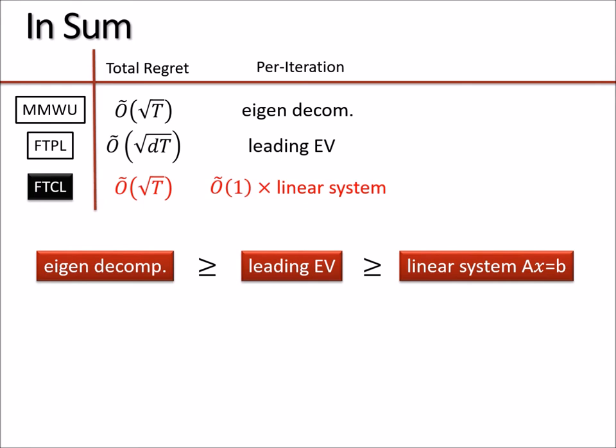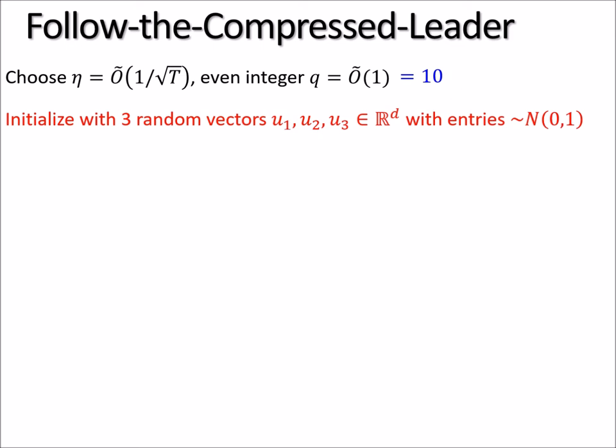So here is our new strategy, follow the compressed leader. At the very beginning, we choose a learning rate η to be roughly the same as before, like 1/√T. We also choose an even integer parameter q. In theory, q needs to be logarithmic in terms of dimension, but in practice I think 10 just suffices. Then the algorithm initializes itself with three random Gaussian vectors u_1, u_2, u_3 with all entries from standard Gaussian N(0,1).